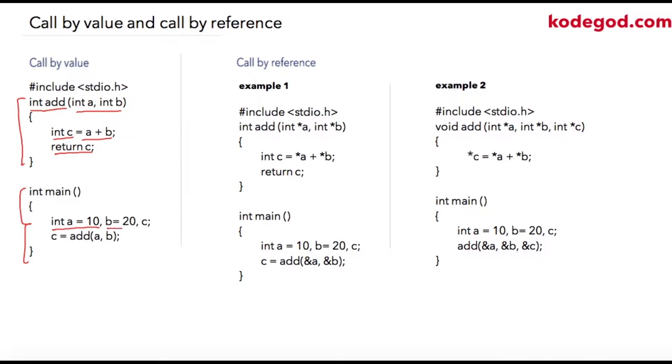So inside of my main function I am initializing a to 10 and b to 20. I am also declaring one more variable as c and then in c I am storing value returned by my function add.